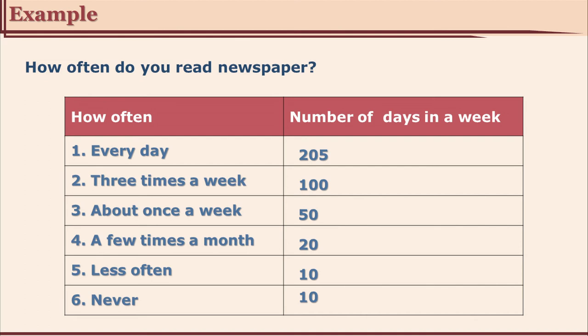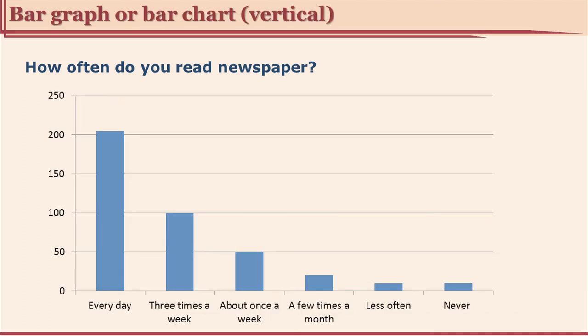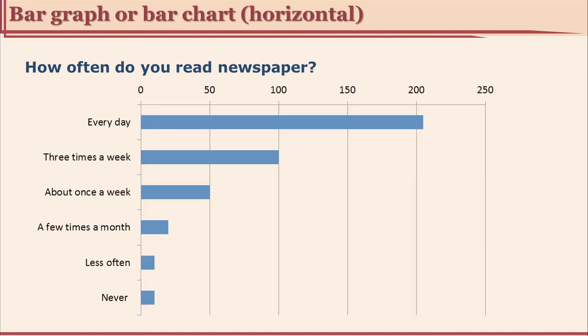Now if you want to represent that graphically, we can use a bar graph, also called a bar chart. It has bars on the x and y axes. On the x axis are the categories and on the y axis — the vertical axis — is the frequency. You can use Excel or plot it manually. You have 6 categories and in each category the frequency is shown. This can be shown vertically or horizontally, and you can convert between the two in Excel. Both show the same thing: the categories and the frequency.